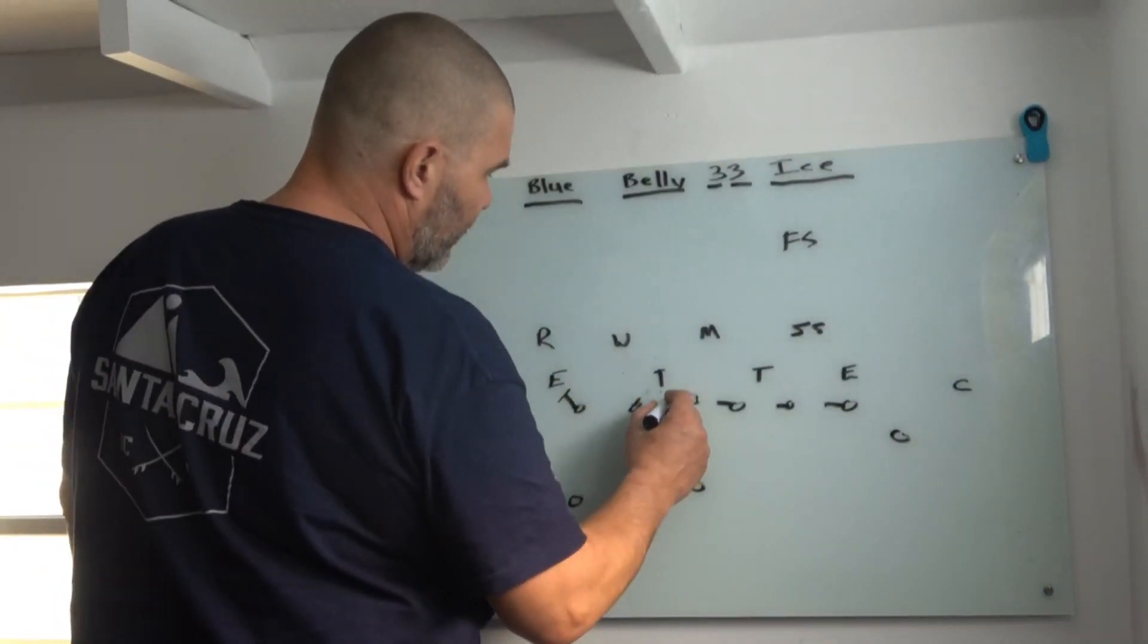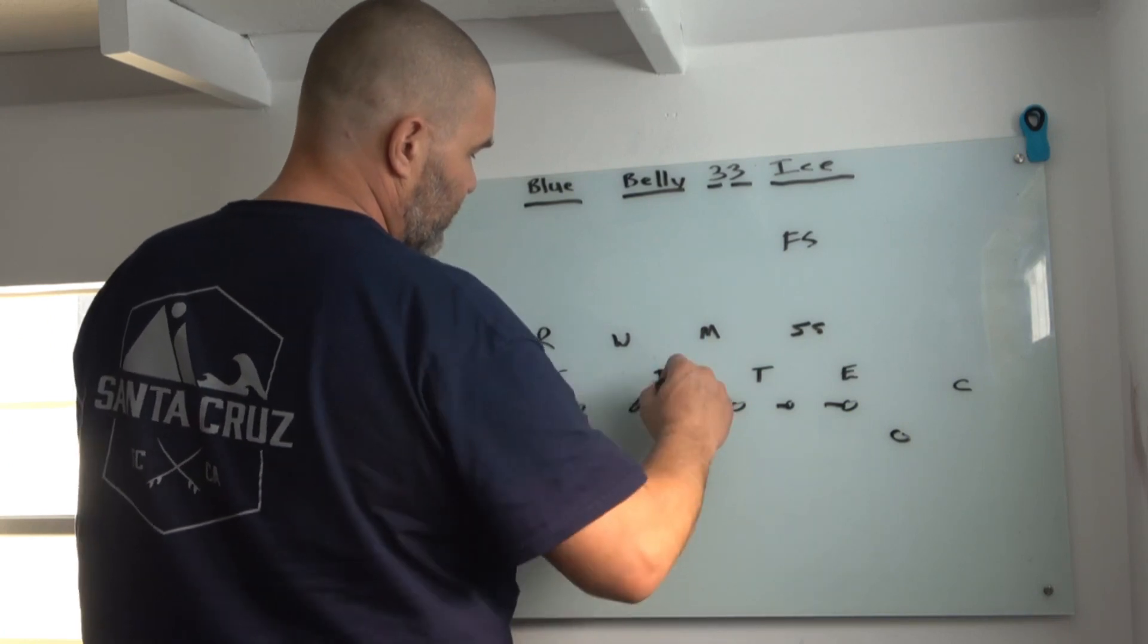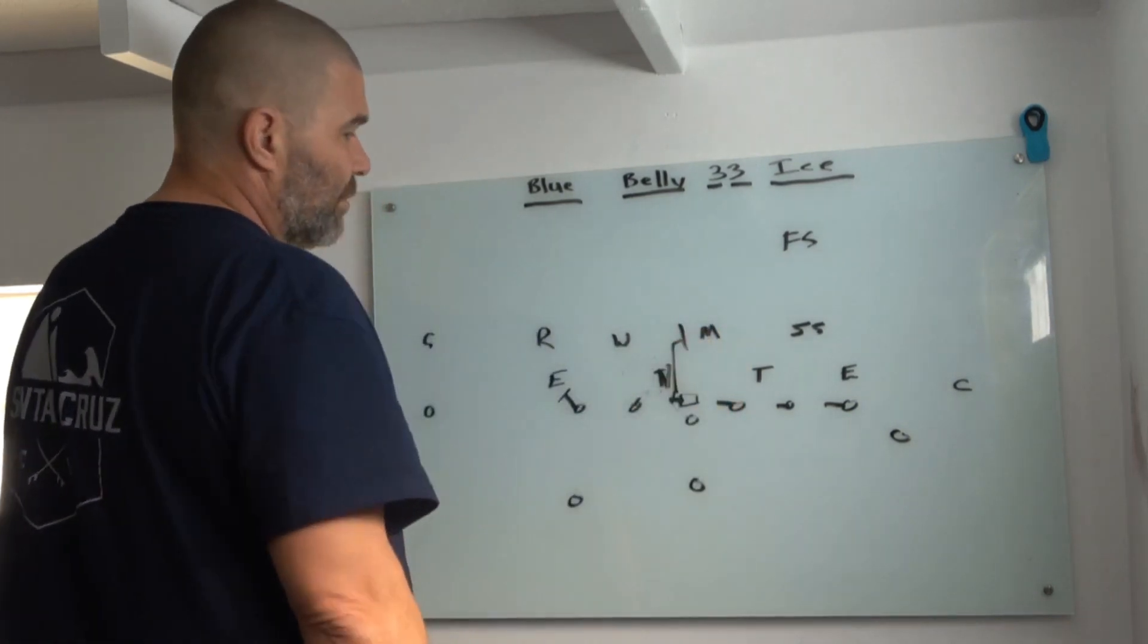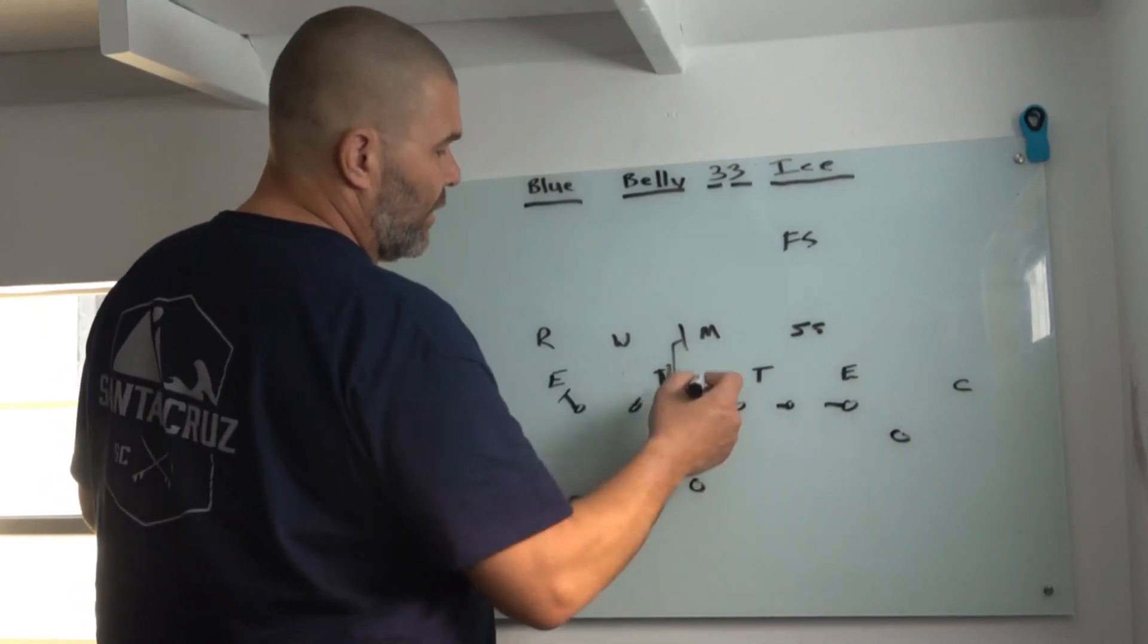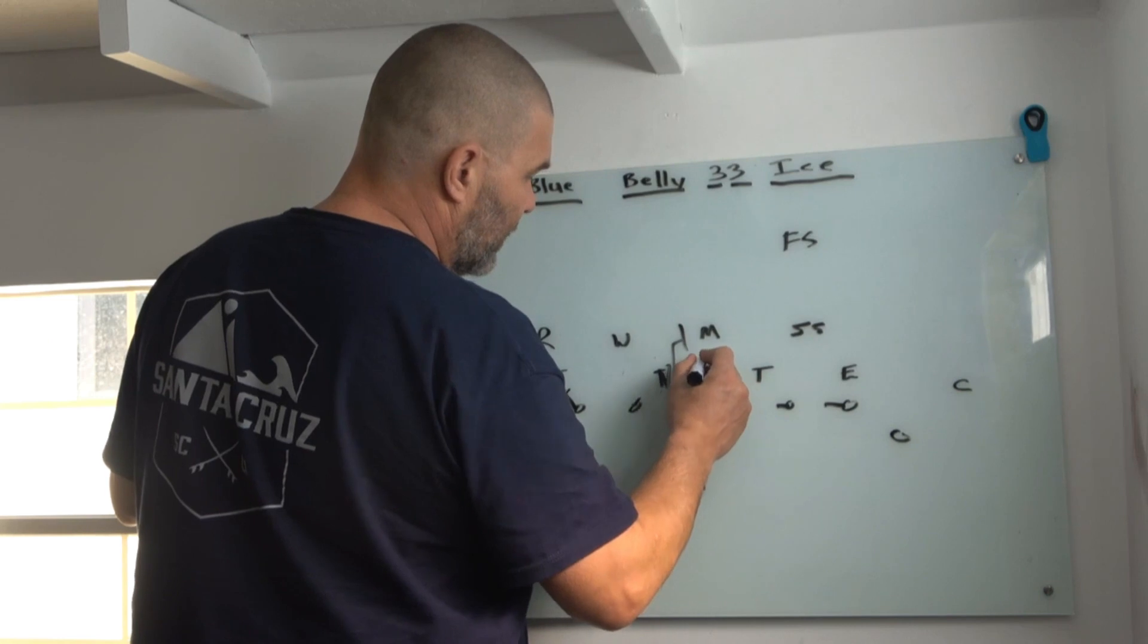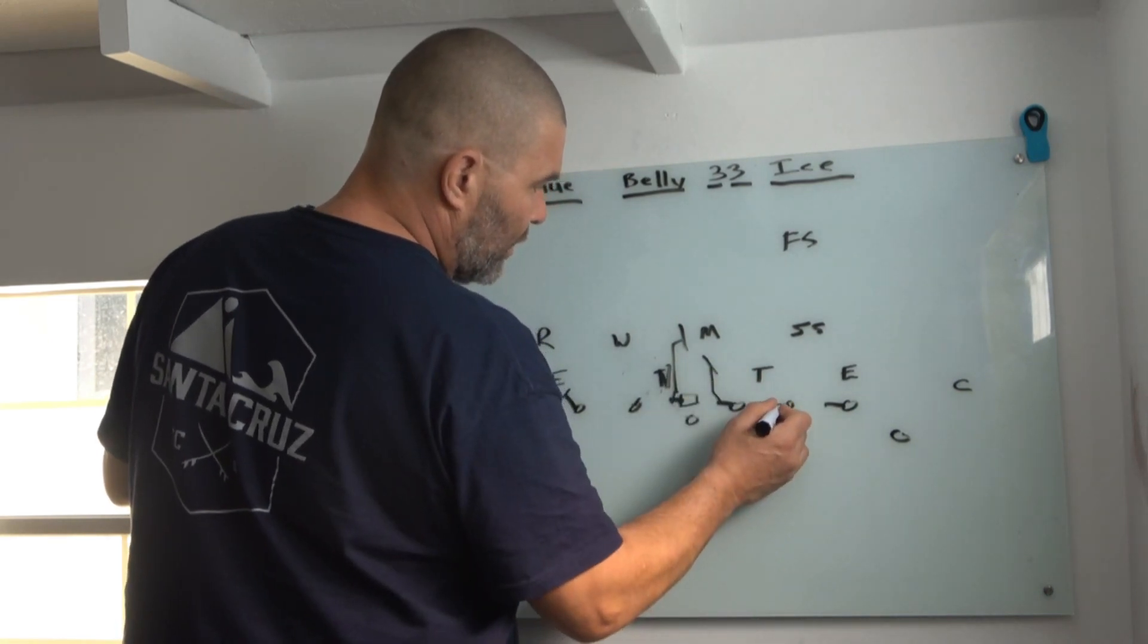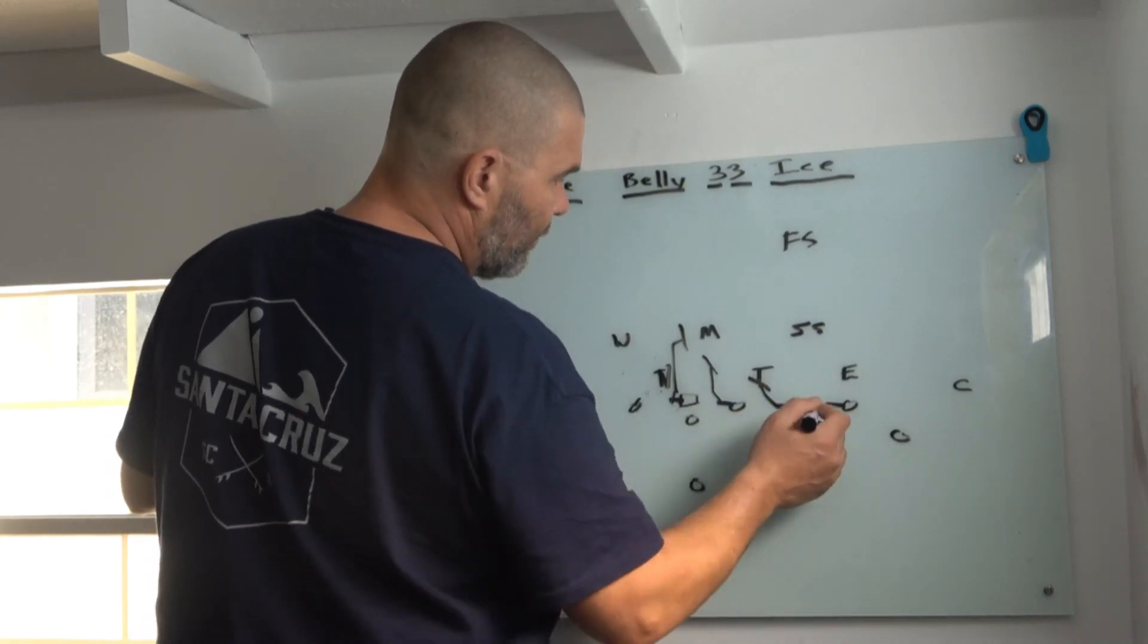So in that case, the center on his fire step is going to punch on the nose and work up to backer. Same with these guys here. They're all scooping to second level. If there's nobody in their play side gap, they're going to work up and scoop. This guy's going to end up crossing his face, so he's going to end up reaching and picking him up.